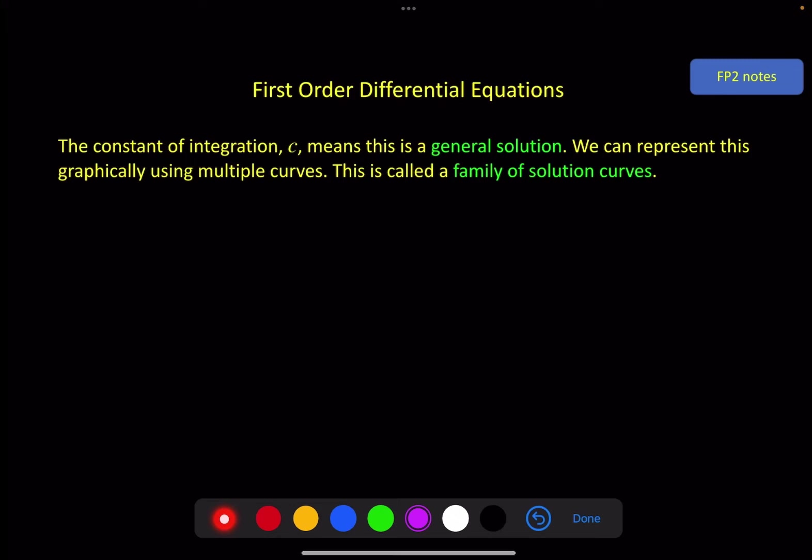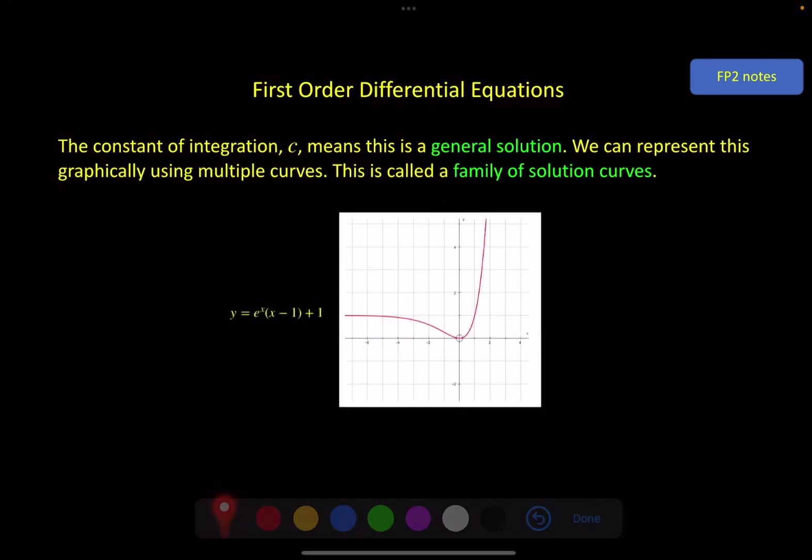The constant of integration that we had in the previous screen means that this is a general solution. You need to be familiar with this term. It might be used in an exam question. We can represent this graphically using multiple curves, and this is called a family of solution curves. Again, this phrase is important. You might be asked to sketch a family of solution curves in an exam question. So for the equation we had on the previous screen, we had a solution e to the x times x minus 1 plus c. Now if we want to do a family of solution curves, we need to put some numbers in for c and draw maybe four or five different graphs to show the pattern of how this looks. So there's the third one, second one, third one, fourth one.